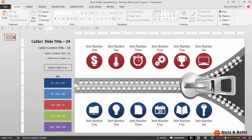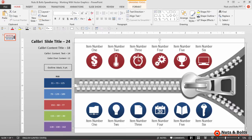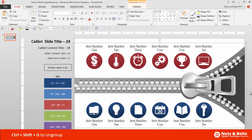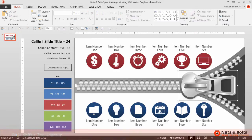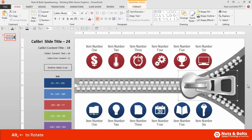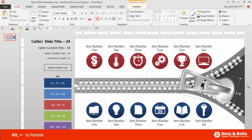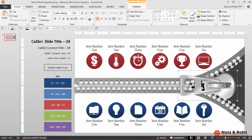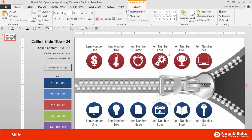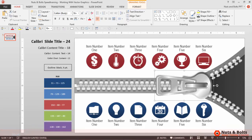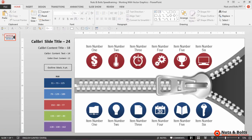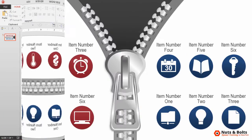Besides formatting, back here with my original graphic I can also rotate the object. I'll hit ctrl+shift+G once and twice to ungroup down to the zipper group level. Holding the alt key on my keyboard I can hit the left arrow key a number of times to rotate the zipper, then holding the shift key I can place the zipper.